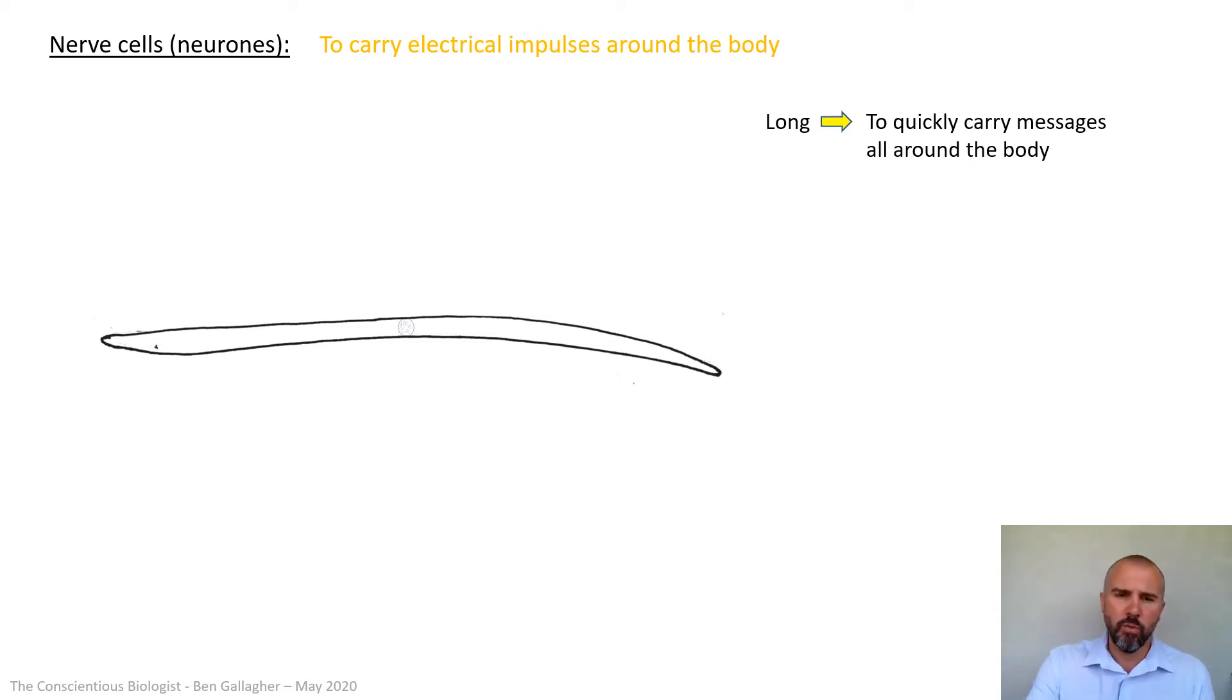That means it can carry a signal a long way, but look at what would happen. That nucleus is now sort of squashed in the middle and that arrow I've just shown zooming across it, that would have to be an electrical signal. Well, think about what that electrical signal could do to the nucleus. The nucleus contains the DNA. If that DNA got damaged by that electrical signal, the DNA wouldn't be able to be read. You wouldn't be able to make the proteins. The cell wouldn't be able to function. So we can't have the nucleus sat there right in the way.